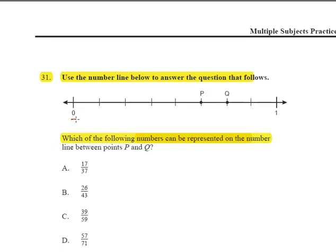This is a number line that goes from 0 to 1, which means that all of the hash marks in between 0 and 1 represent fractions and we want to find what point falls right between P and Q right here. Well notice what we're given down below. We are given fractions.